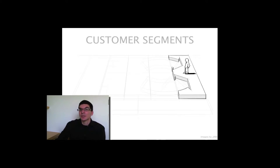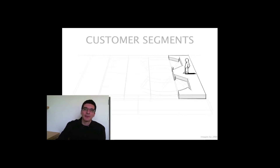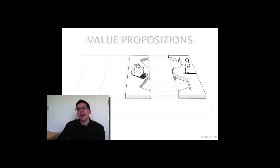The first building block is customer segments — you need to ask yourself which customers you are serving. For example, a newspaper has two customer segments: readers who want to be informed and entertained, and advertisers who want to reach an audience and sell something. These are two different customer segments with two different jobs to be done, and for each segment you will have a different value proposition — a set of products and services that help the customer get the job done.